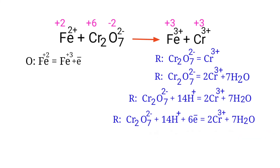The electrons lost in the oxidation half-reaction must equal the electrons gained in the reduction half-reaction. The oxidation half-reaction has 1 electron, while the reduction half-reaction has 6 electrons. To balance the number of electrons in the two half-reactions, we multiply the oxidation half-reaction by a coefficient of 6.